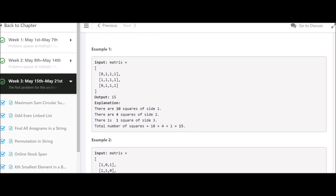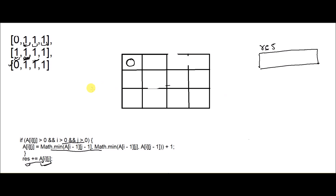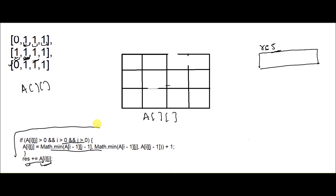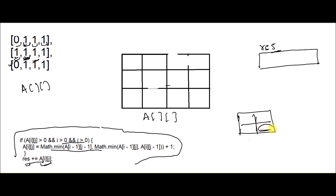To solve this, I've taken the given matrix A and drawn it separately for understanding. We also have a result variable that we will return. The key idea is that we consider each element as the right and bottom-most element of a square. For example, if a square is 2×2, then the bottom-right element is that corner element.